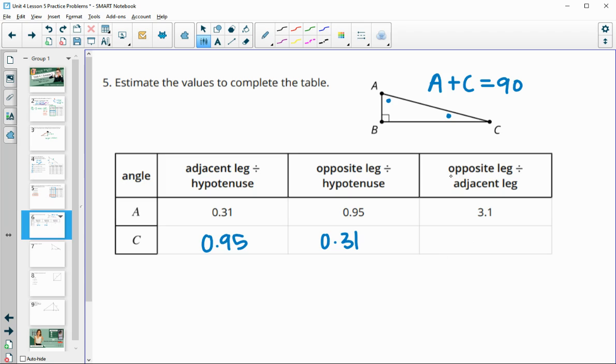Then for this final one, you do the one with the opposite, so 0.31, divided by the one with the adjacent, so 0.95. Take 0.31 divided by 0.95 in your calculator, and then you'll get 0.326 or 0.33 for this one.